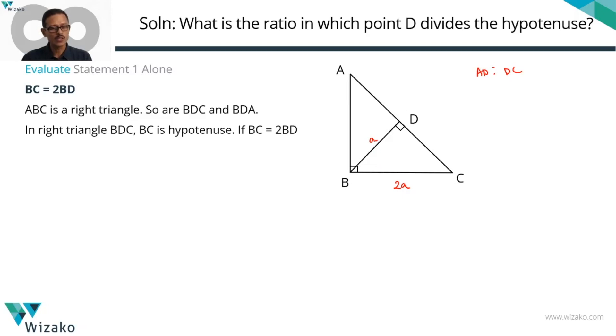Now, some of you will already know what is going to be the ratio. If this is 1 times and this is 2 times, you know what this DC is going to be. DC is obviously going to be equal to square root of the hypotenuse squared minus BD squared, which is square root of 4A squared minus A squared, which is square root of 3A squared, which is equal to root 3A.